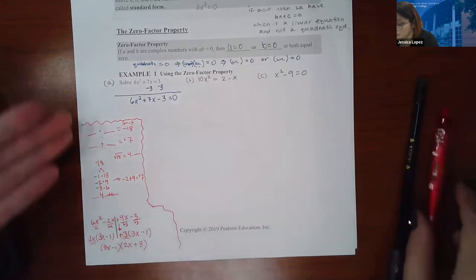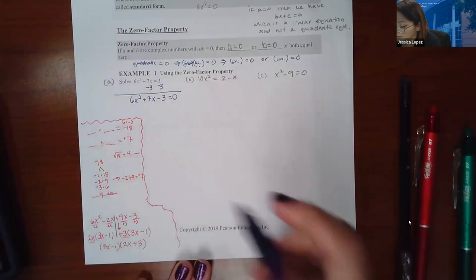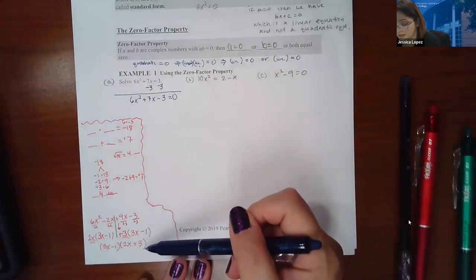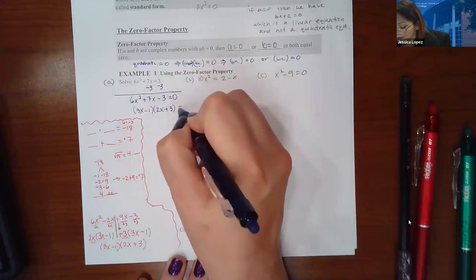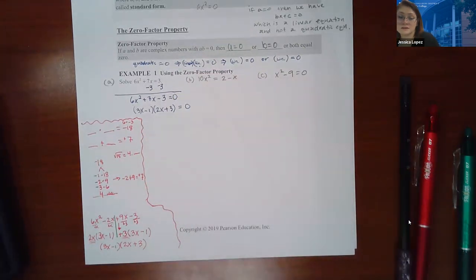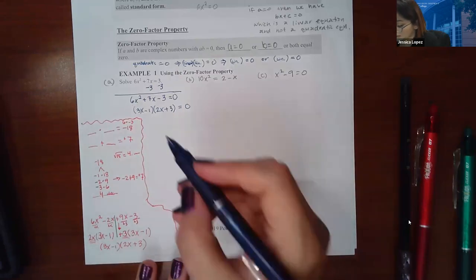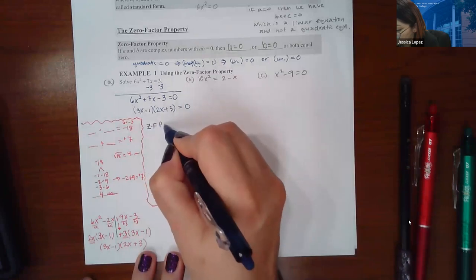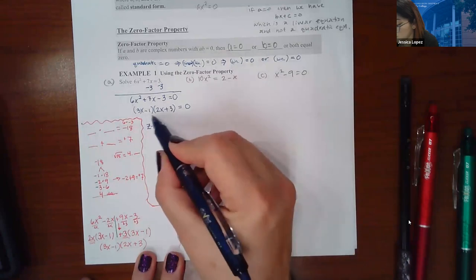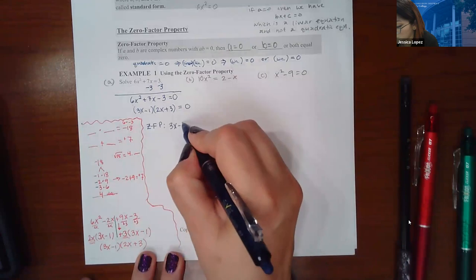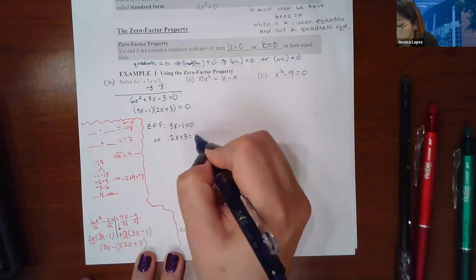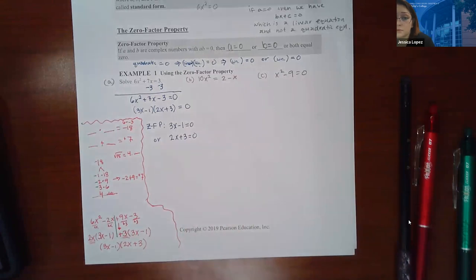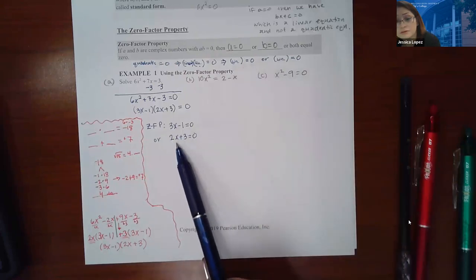Now for us, we did all this work to factor. When I come back to my problem, I know what those factors are and I have factored the left-hand side of the equation. According to the zero factor property, if these two things multiplied together equal zero, then the first parentheses needs to equal zero or the second parentheses needs to equal zero. Notice these are both linear expressions now.